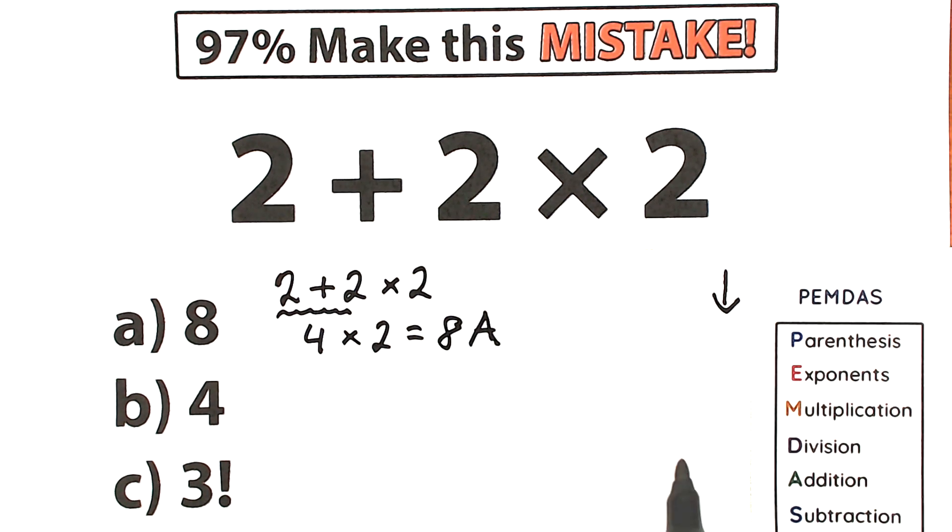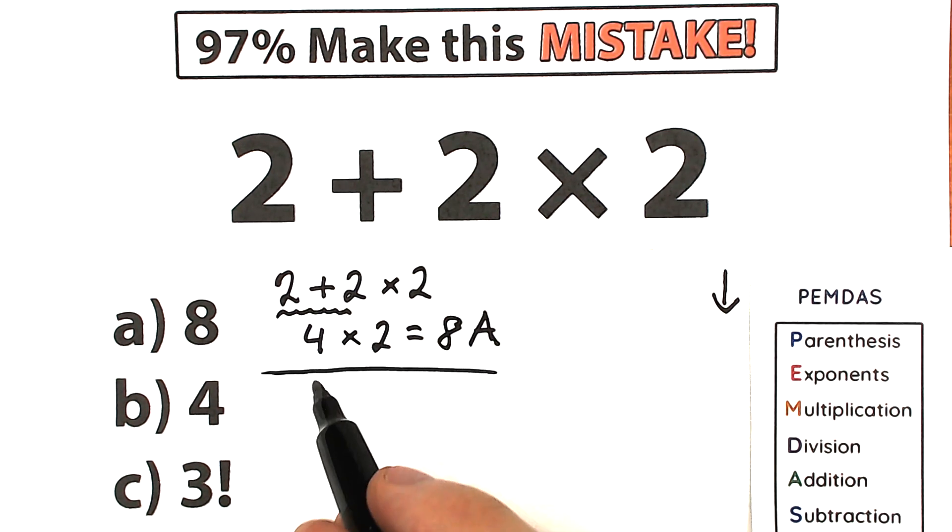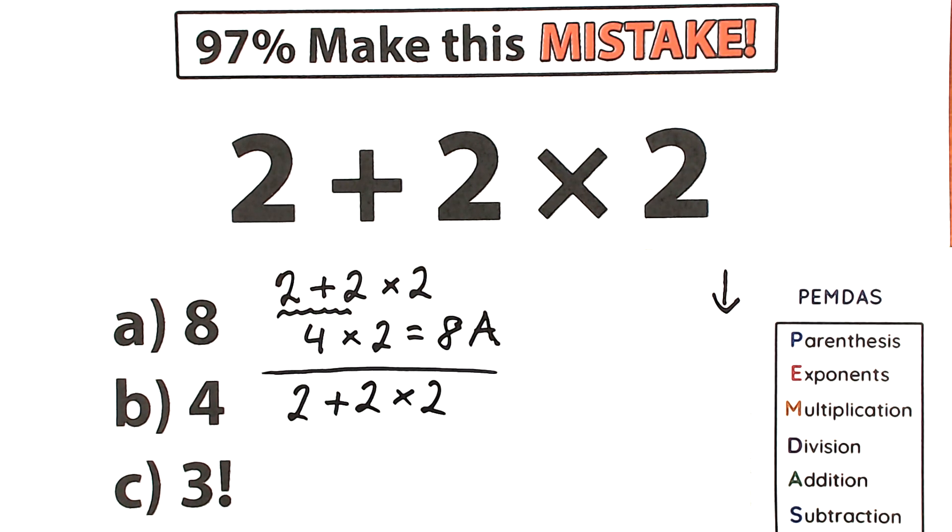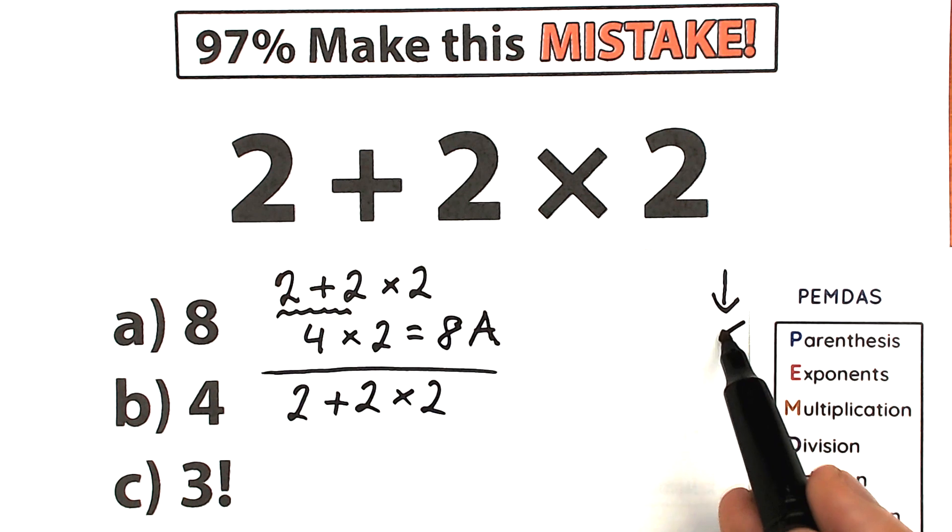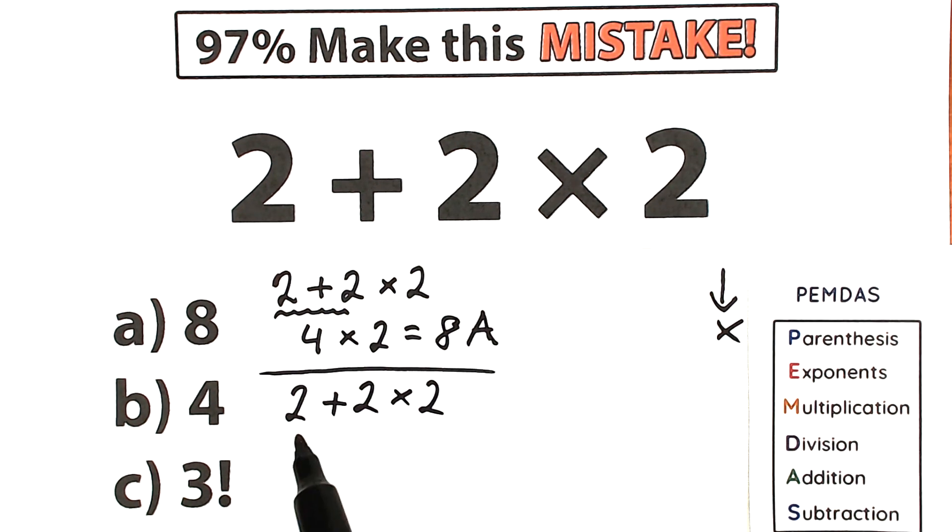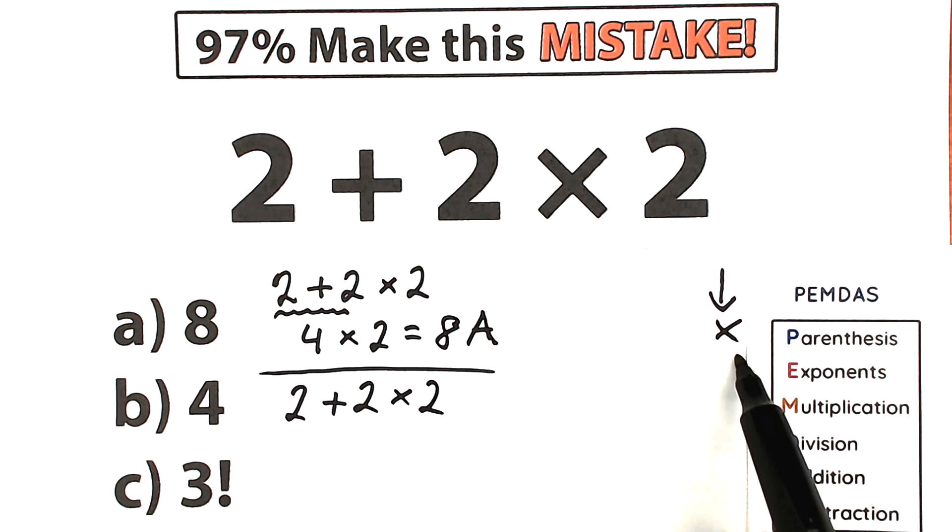So the first step, parentheses. Let's scan, where do we have parentheses? But before let's rewrite our expression: 2 plus 2 times 2. The first step, parentheses, let's scan. I don't see any parentheses, so we just skip this part. What about exponents? I don't see any exponents, so we just skip this part as well.